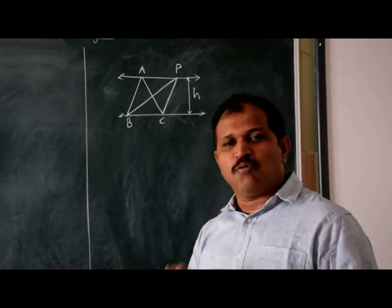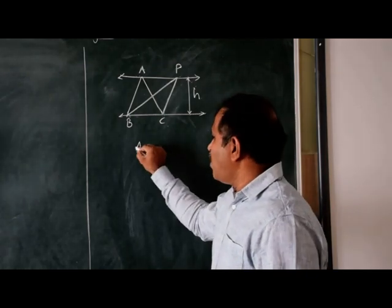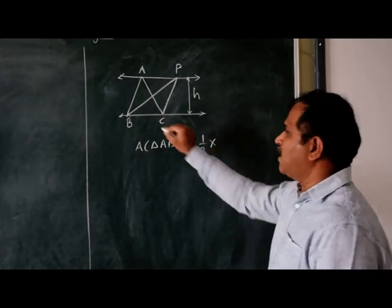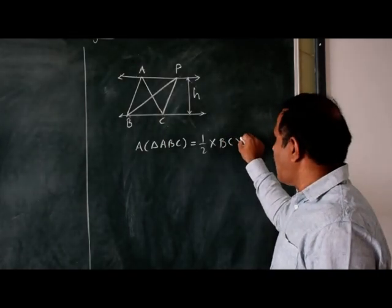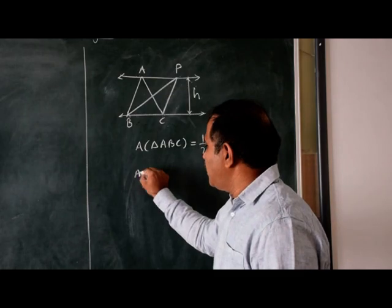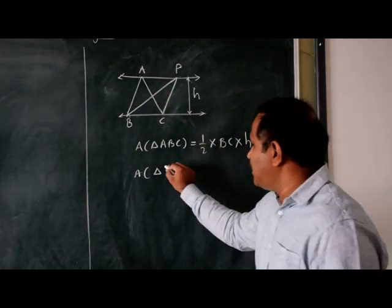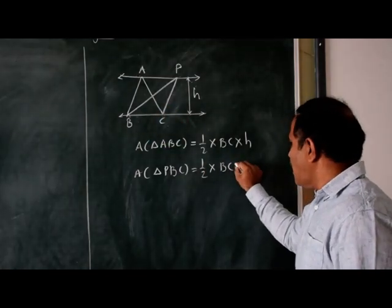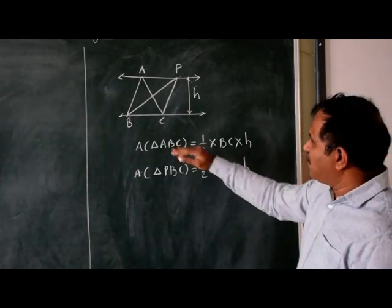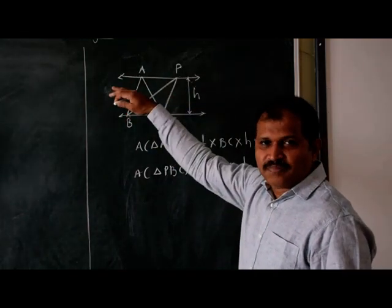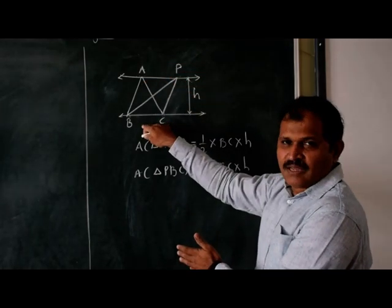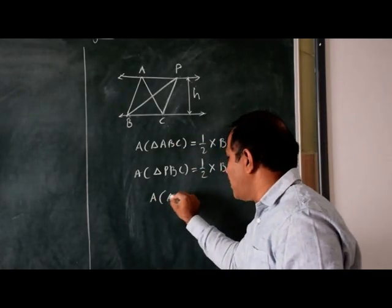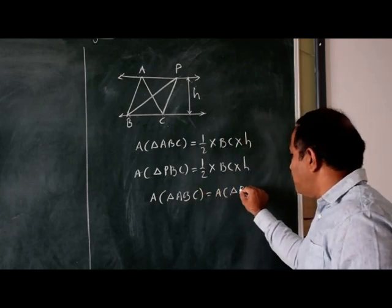You know the formula to find the area of a triangle. Area of triangle ABC equals half into BC into H. In the same way, area of triangle PBC equals half into BC into H. Therefore, if triangles are drawn between the same two parallel lines having the same base, their height will be equal and therefore their areas are equal. So area of triangle ABC equals area of triangle PBC.